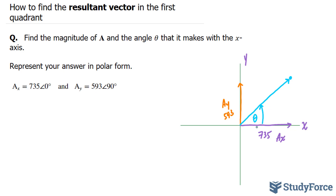To do that, we can use two formulas. To find theta, we can use trigonometric functions — specifically tangent. And to find the magnitude, we can use the Pythagorean theorem.